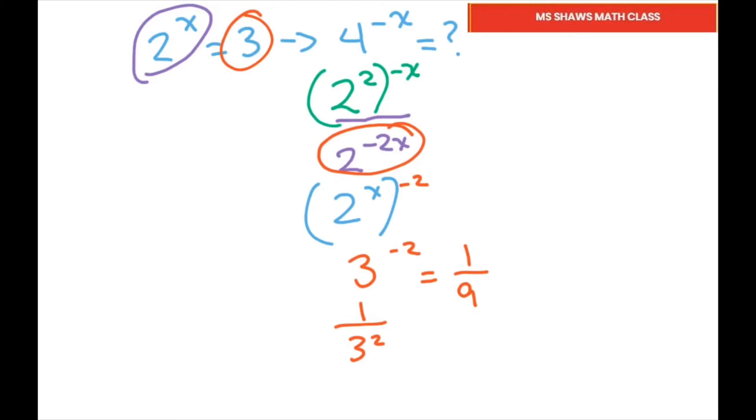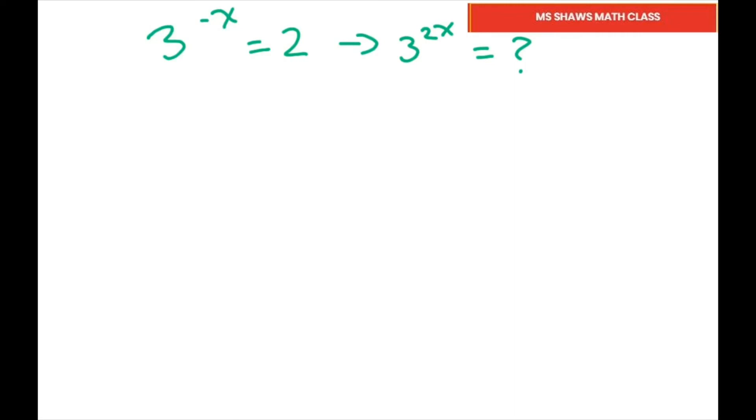All right, the next one is this one. I want this to look like this one, so what do I have to put on the outside here? I have to put in negative 2, because if you simplify that, that would be 3 to the 2x, which is what I wanted. Now I have it looking like this, and we know that equals 2.